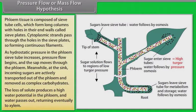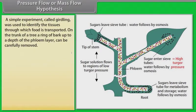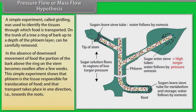A simple experiment called girdling was carried out to identify the tissues through which food is transported. On the trunk of a tree, a ring of bark up to a depth of the phloem layer can be carefully removed. In the absence of downward movement of food, the portion of the bark above the ring on the stem becomes swollen after a few weeks. This simple experiment shows that phloem is the tissue responsible for translocation of food and that transport takes place in one direction, which means towards the roots.